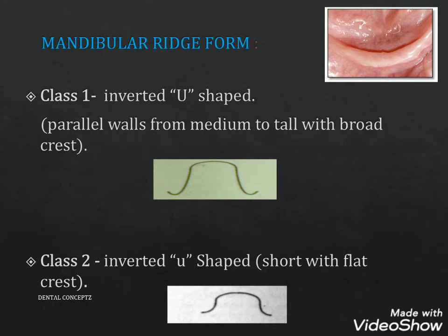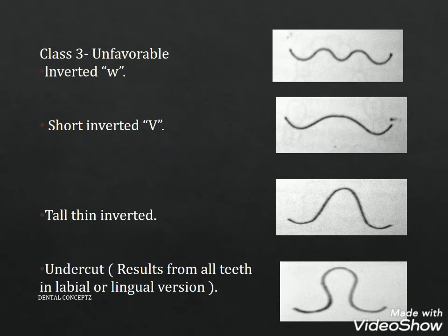For mandibular ridge form, Class 1 is tapering or inverted U-shaped ridges with parallel walls from medium to tall with broad crest. Class 2 ridges are inverted U-shaped with short walls and flat crest. Class 3 ridges are tapering with unfavorable inverted W-shape or short inverted V-shape, or tall inverted ridges, or ridges with undercuts resulting from teeth in labial or lingual version.